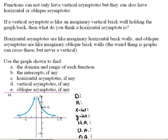So here we have, you know, kind of talk about what it is. A vertical asymptote, if that is like an imaginary vertical brick wall holding the graph back, then what do you think a horizontal asymptote would be? Well, a horizontal asymptote would be very similar. It's like an imaginary horizontal brick wall.